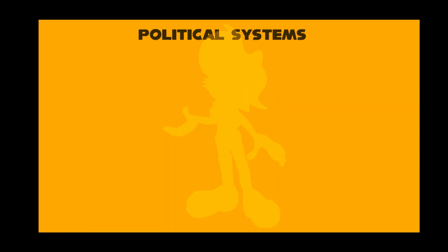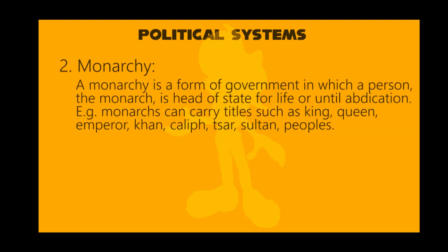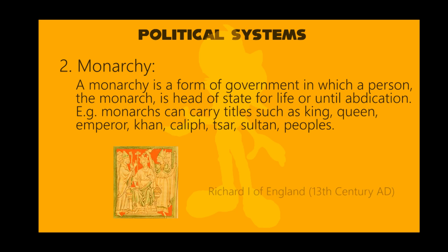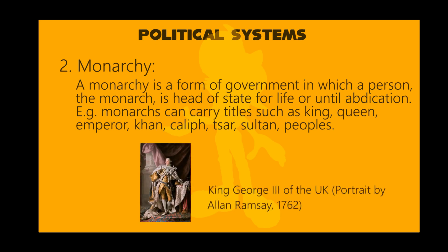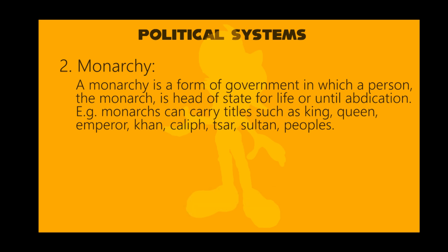Next, we'll talk about monarchy. A monarchy is a form of government in which a person, the monarch, is head of state for life or until abdication. The legitimation and governing power of the monarch may vary from purely symbolic to restricted, to fully autocratic, combining executive, legislative, and judicial power. A monarchy can be a polity through unity, personal union, basilage, or federation. Monarchs can carry titles such as king, queen, emperor, khan, caliph, czar, sultan, and peoples.